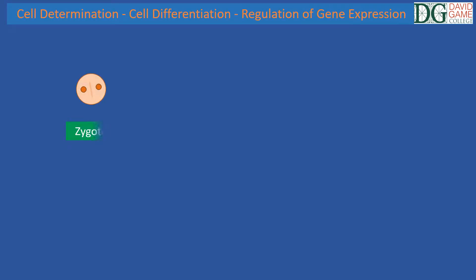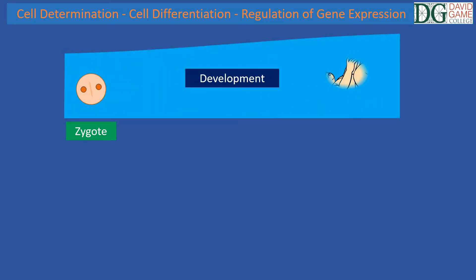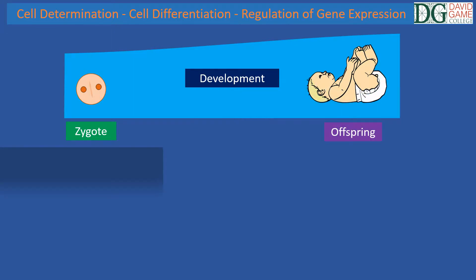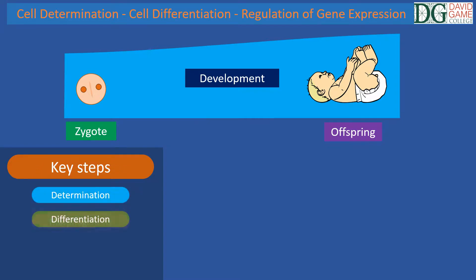Once the zygote is formed from a sperm and an egg, a series of critical sequential events occur that lead to the development of an offspring. At its very simplest, the key steps include determination, differentiation, morphogenesis and growth.